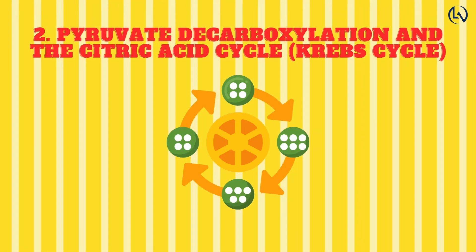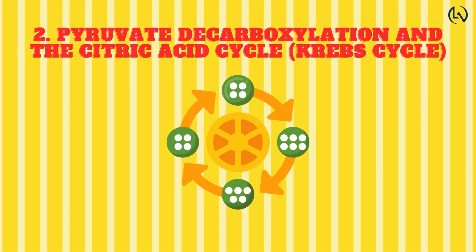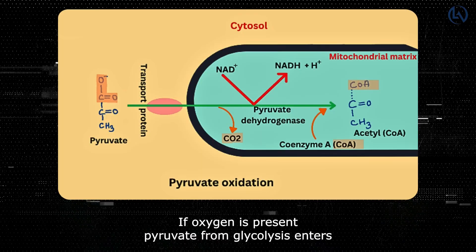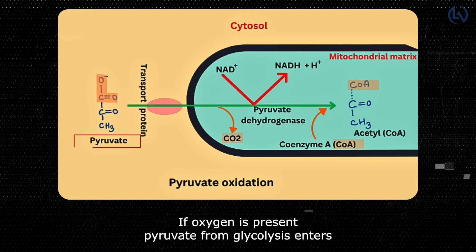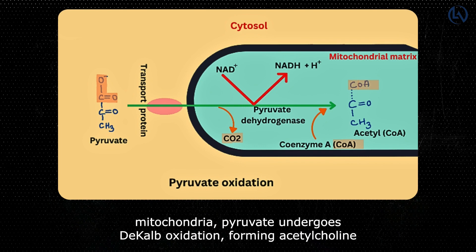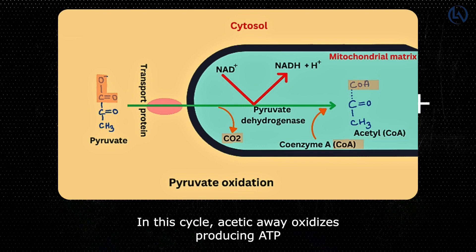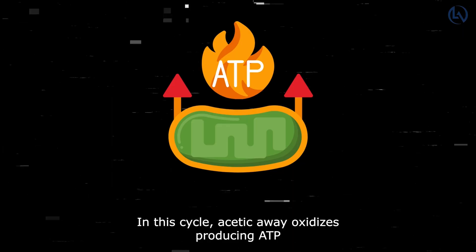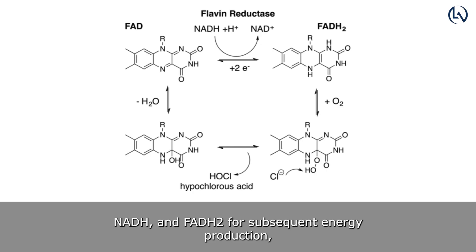Pyruvate Decarboxylation and Citric Acid Cycle: If oxygen is present, pyruvate from glycolysis enters the mitochondria. Pyruvate undergoes decarboxylation, forming acetyl-CoA, which enters the citric acid cycle. In this cycle, acetyl-CoA is oxidized, producing ATP, NADH, and FADH2 for subsequent energy production.